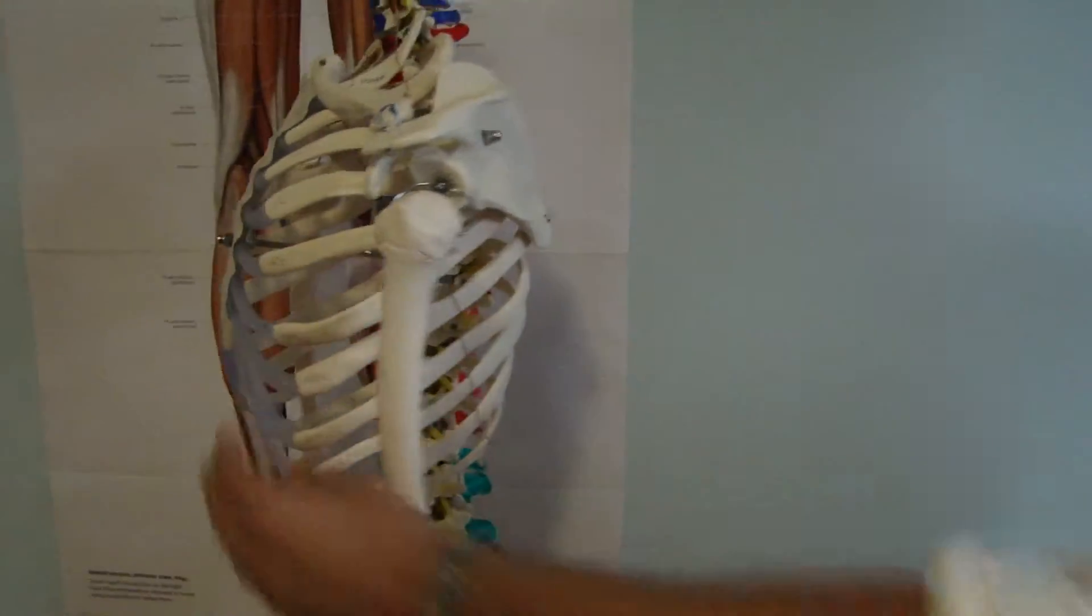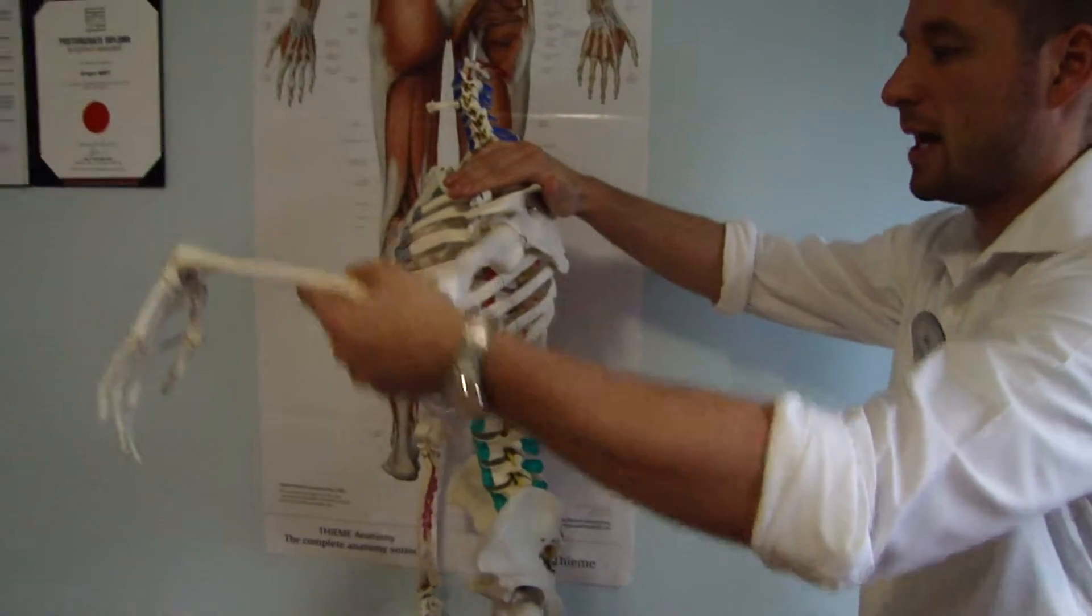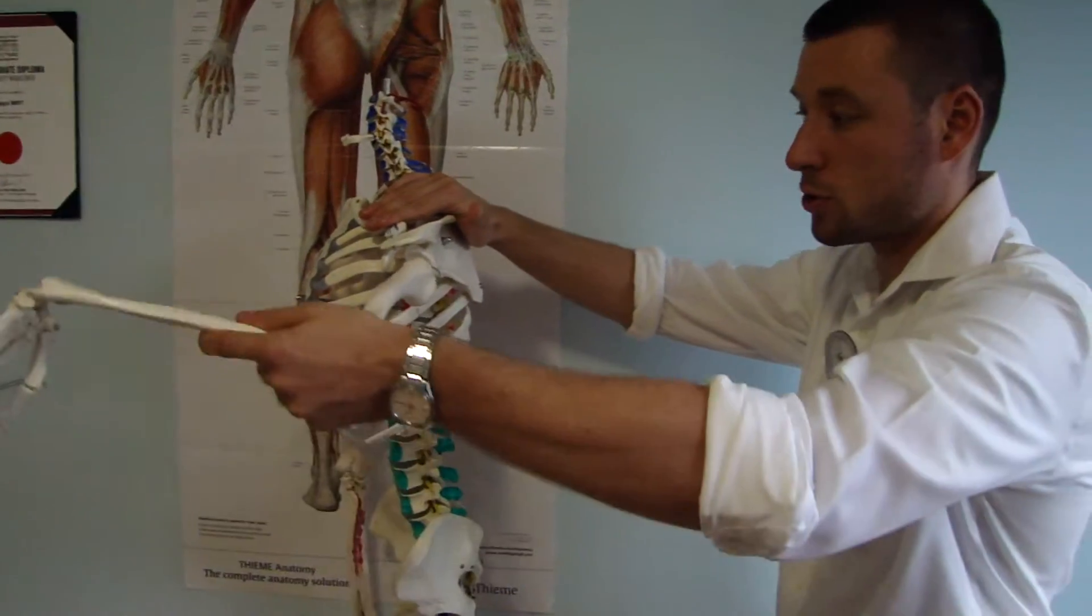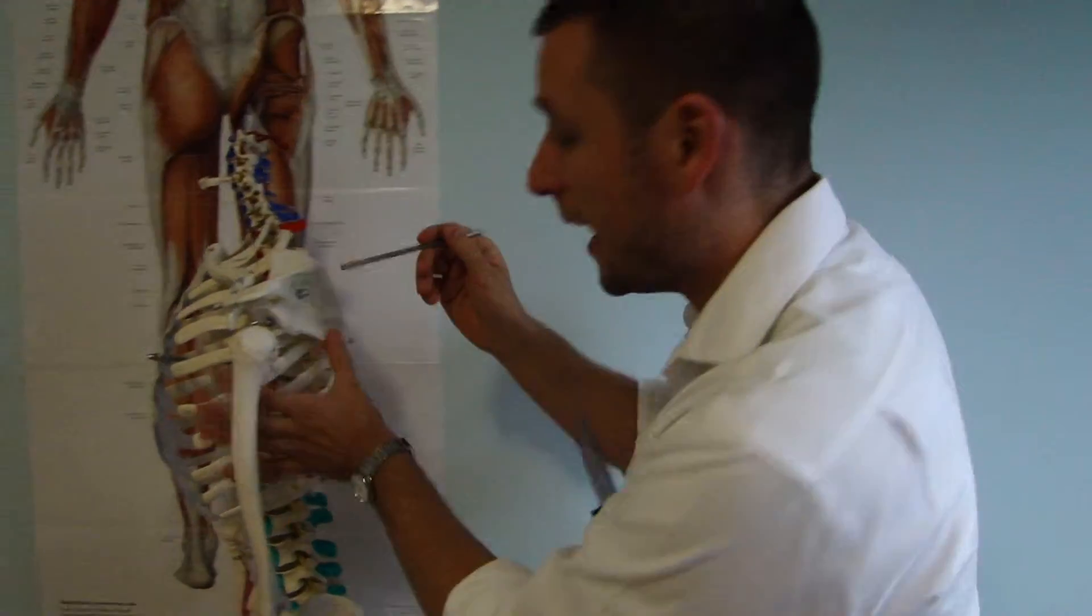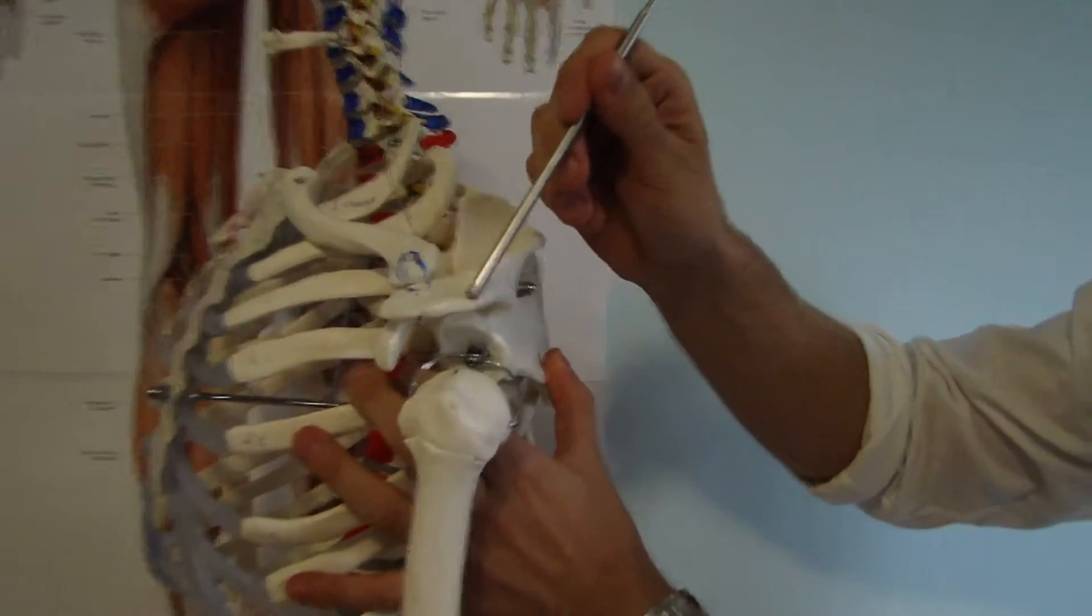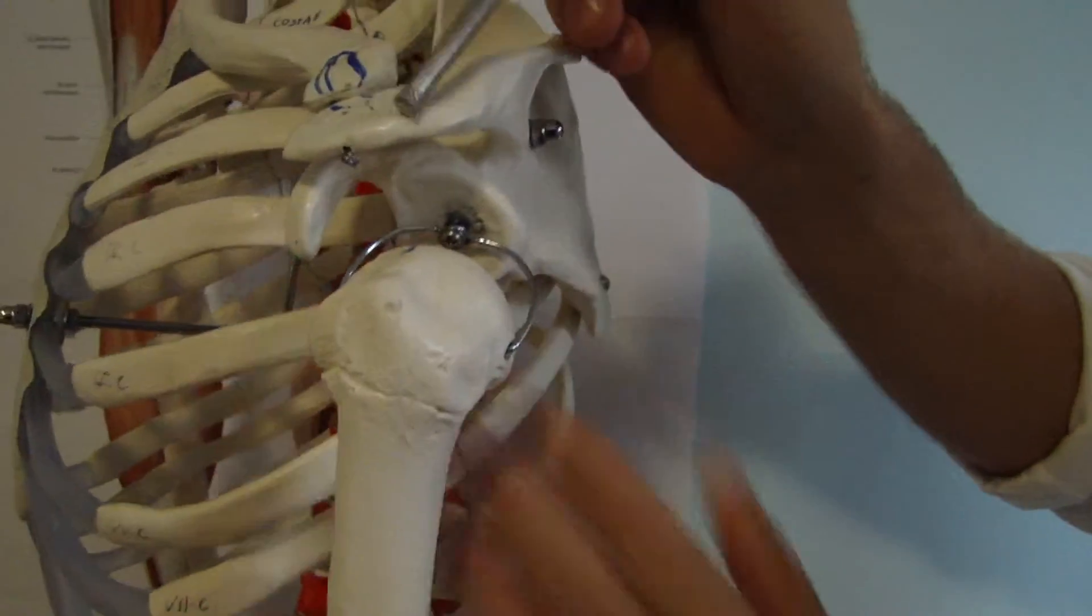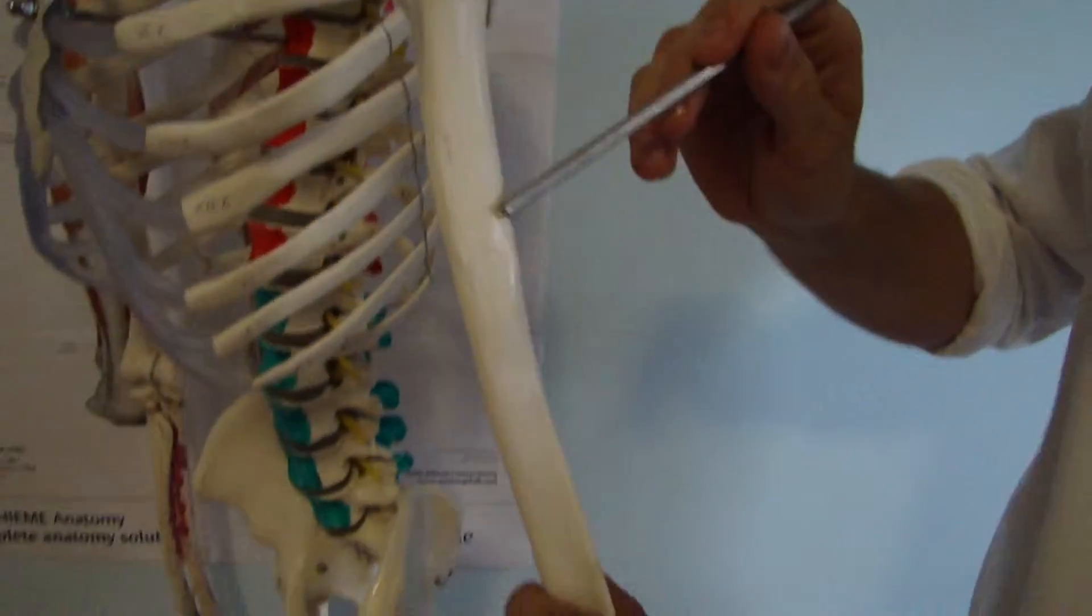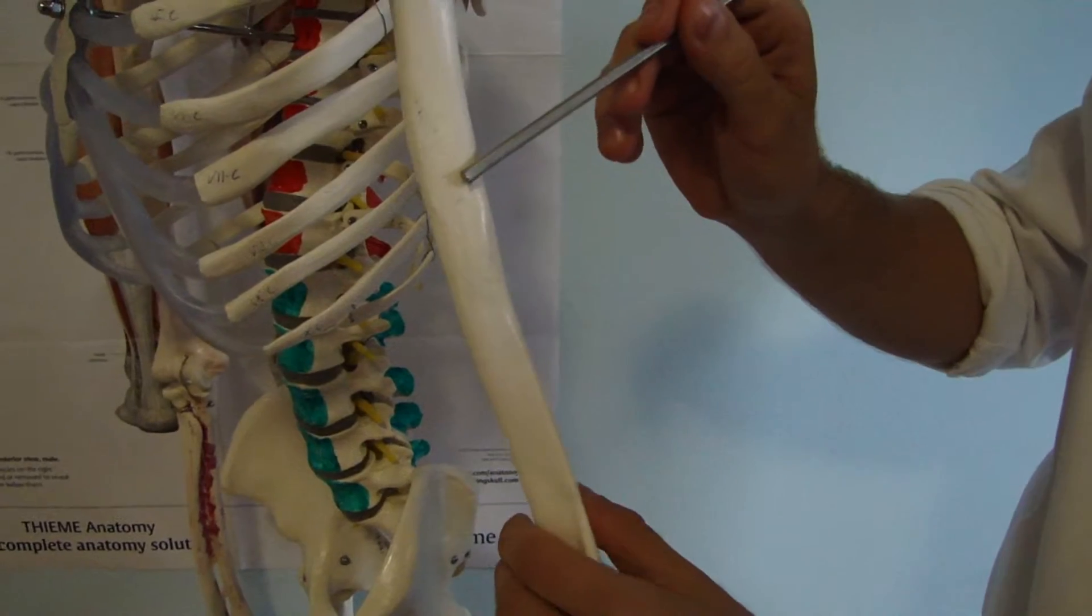And now another move is abduction. Abduction in glenohumeral joint. Main muscle here is again deltoid but now pars acromialis. So lateral and superior part of the acromion over here. And it goes down to deltoid tuberosity of humerus.